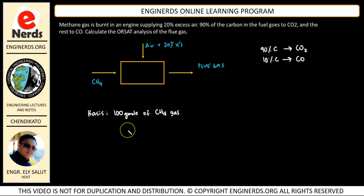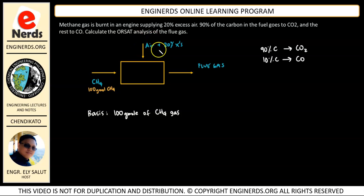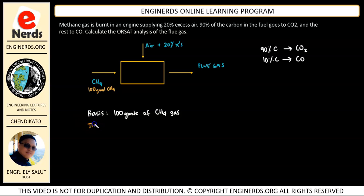We have 100 gram mole of CH4. We need to find how much air is being supplied. To avoid confusion, we need to get the theoretical air first and then add the 20% excess. To get the air supplied, let's first get the theoretical air supplied by considering the theoretical combustion.